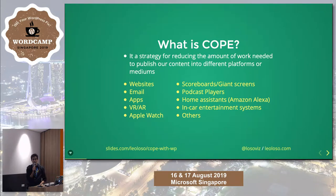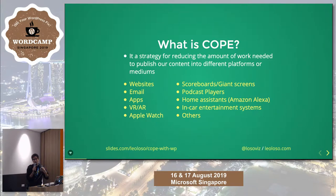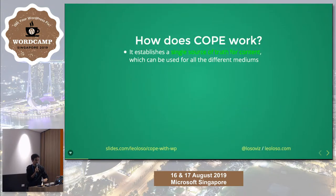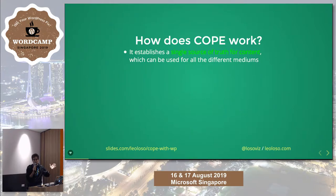The idea is you have an application running — website, newsletter, app — and you don't want to work so much adapting the content for different platforms. So the idea is: how can we minimize this amount of work? It establishes a single source of truth for content which can be used for all the different mediums. If we have only one single source of truth that works everywhere, we don't need to keep reformatting it for each platform.